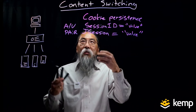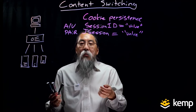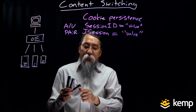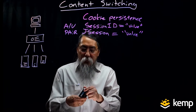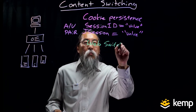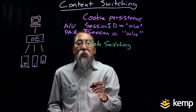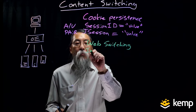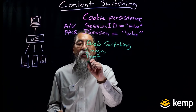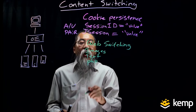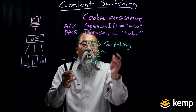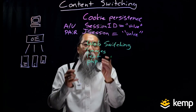The second use case for content switching is managing data to specific components. We leverage this by looking at the requests coming from the client. For example, I have a web page with lots of content — there are going to be various pieces: images, text, dynamic content like a PHP server, and other pieces that make up this website. I want to separate the content onto different servers based on the type of content.